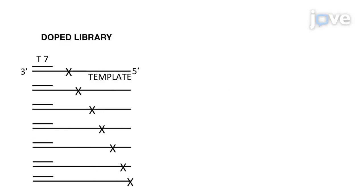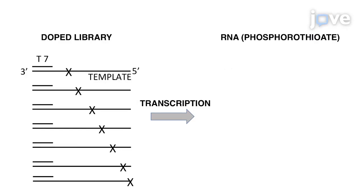The next step in this protocol is the synthesis of separate RNAs with each phosphorothioate nucleotide, followed by 5' end radio labeling of the RNA.